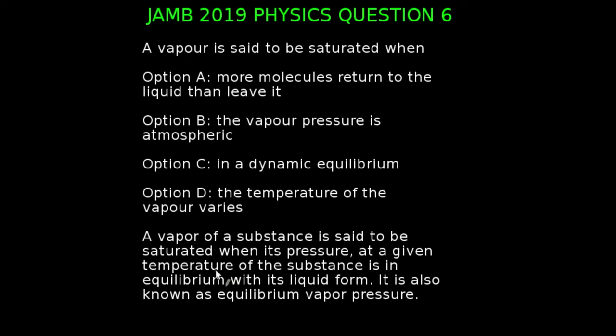JAM 2019 physics question number 6. A vapor is said to be saturated when: a, more molecules return to the liquid than leave it, b, the vapor pressure is atmospheric, c, in a dynamic equilibrium, d, the temperature of the vapor varies. By definition, a vapor of a substance is said to be saturated when its pressure at a given temperature of the substance is in equilibrium with its liquid form. It is also known as equilibrium vapor pressure.